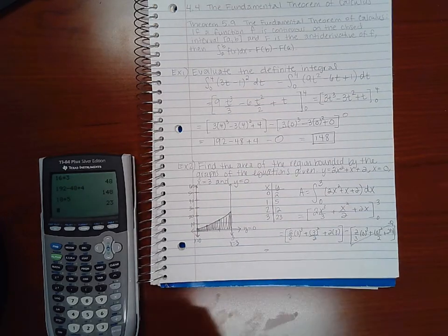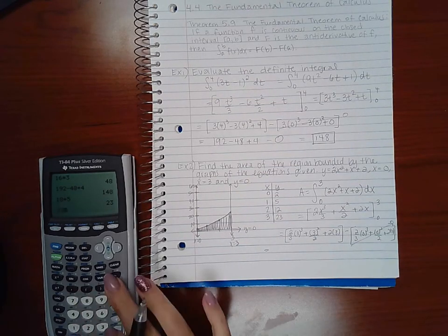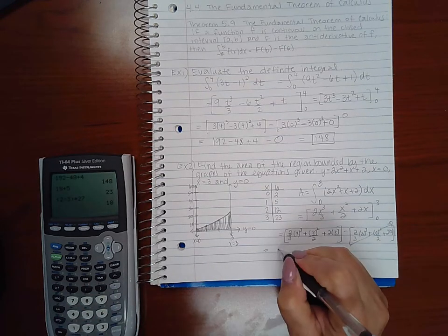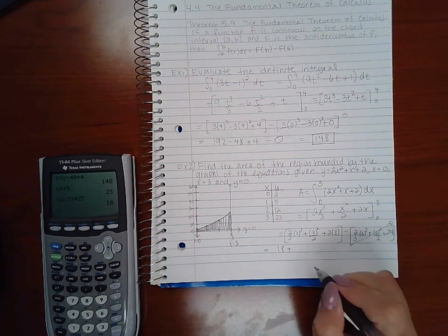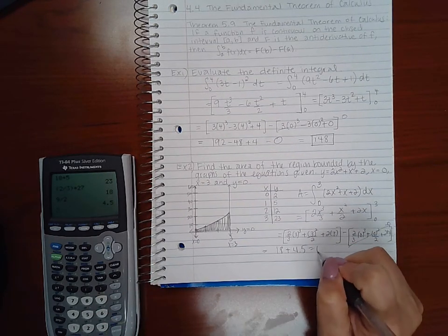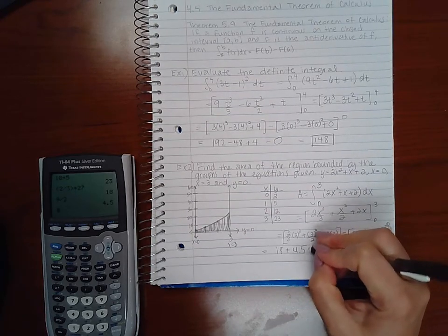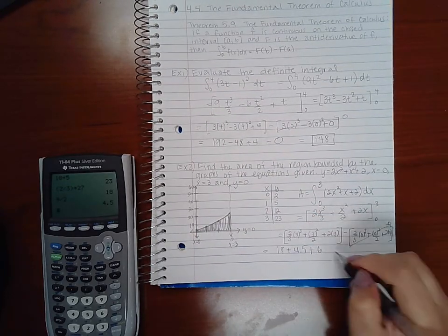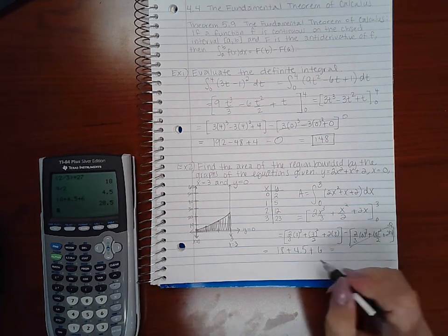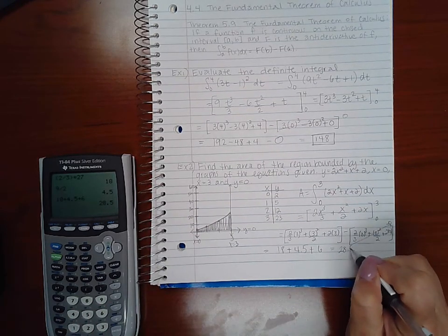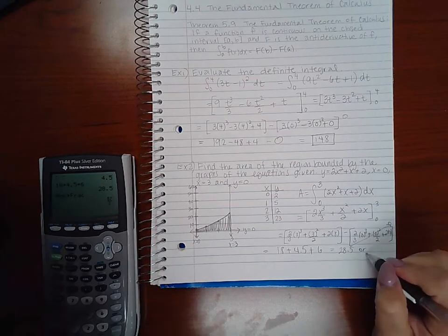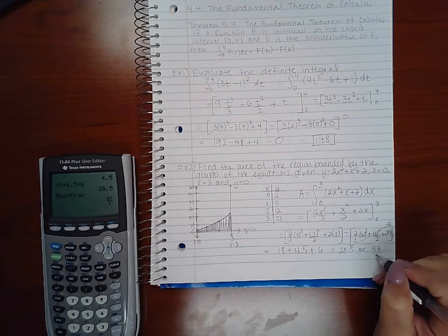Which means I end up with 2 over 3 times 27, which is 18, plus 9 over 2, which is 4.5, and 6 there. So I get 28.5, or if I put that in a fraction, 57 over 2.